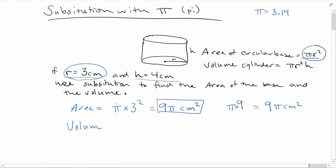For the volume, the formula is πr²h, so π × 3² × 4. Simplifying, 3² is 9, times 4 is 36. We write that as 36π, and in this case, centimeters cubed because it's the volume.